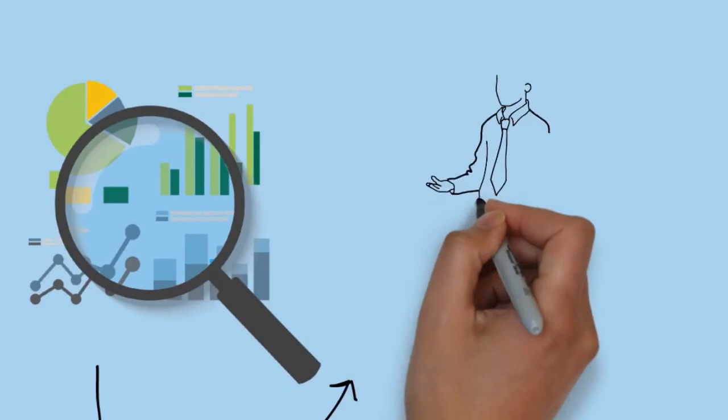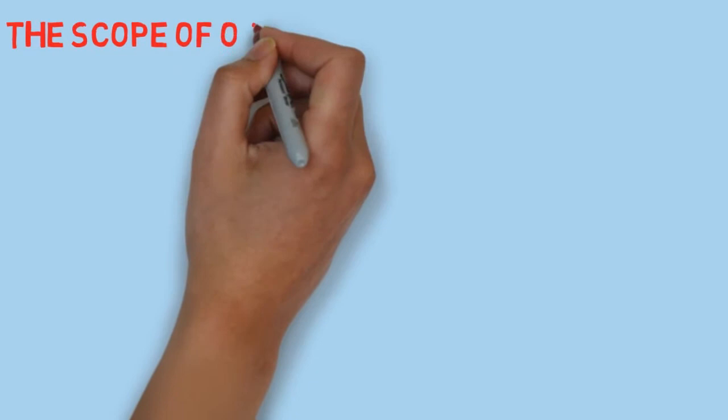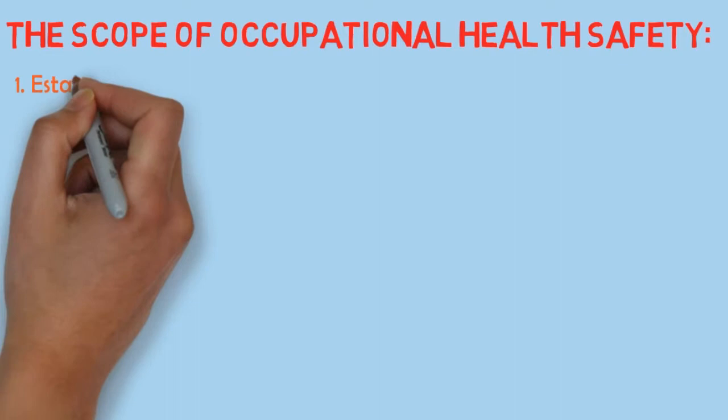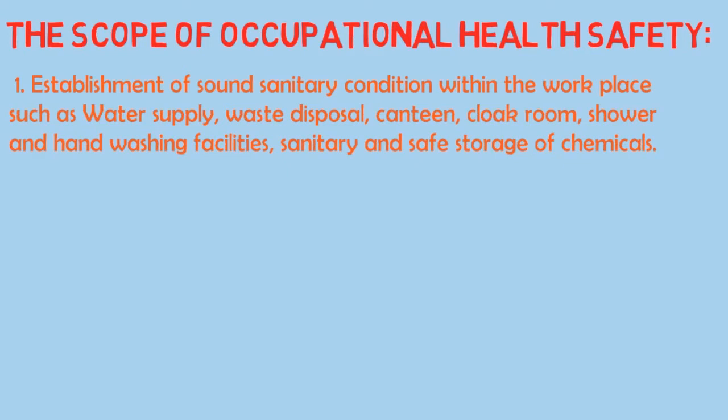The officer can thus give an expert opinion as to the degree of risk posed by the environmental factor or job stresses. Occupational and environmental health includes prevention and control of hazards, and curative and rehabilitative programs to either reduce or eliminate exposures. The scope of occupational health safety includes: establishment of sound sanitary conditions within the workplace such as water supply, waste disposal, canteen, cloakroom, showers and hand washing facilities, and sanitary and safe storage of chemicals.